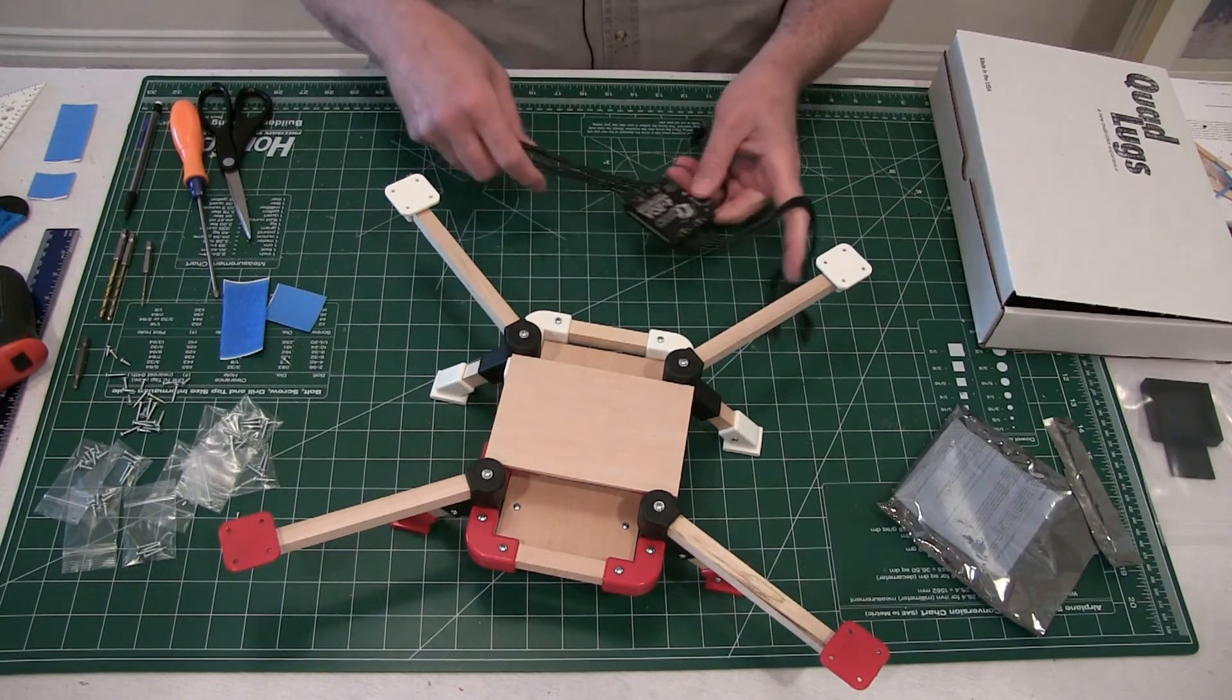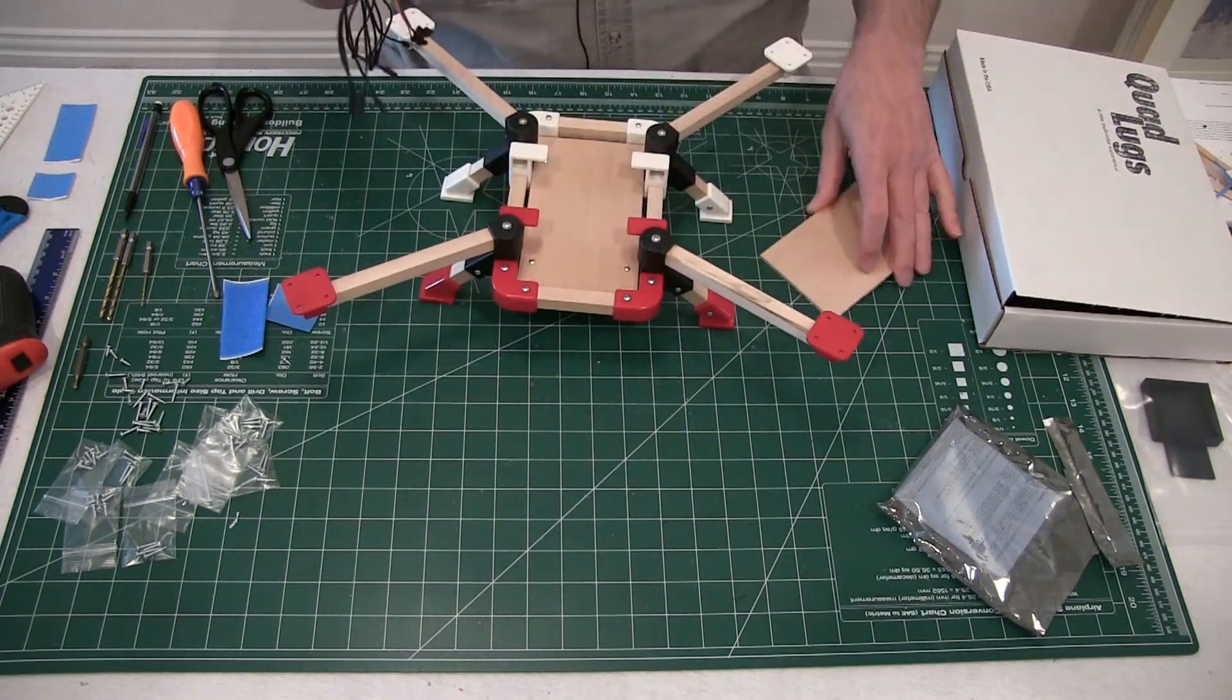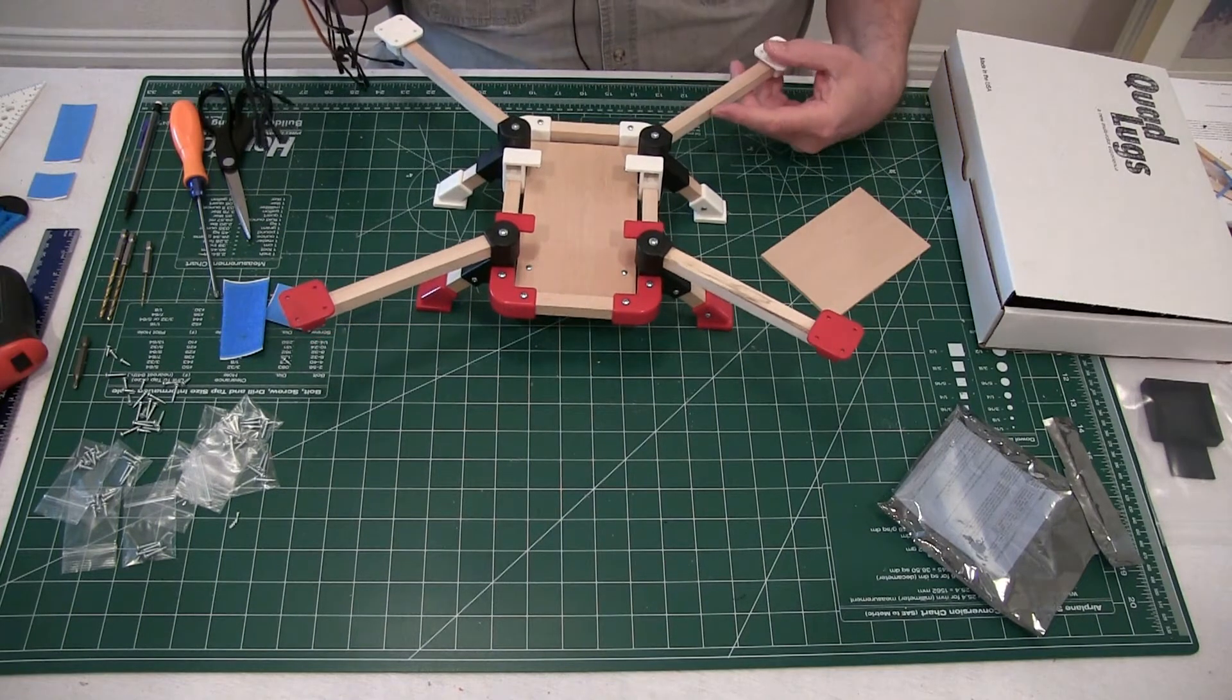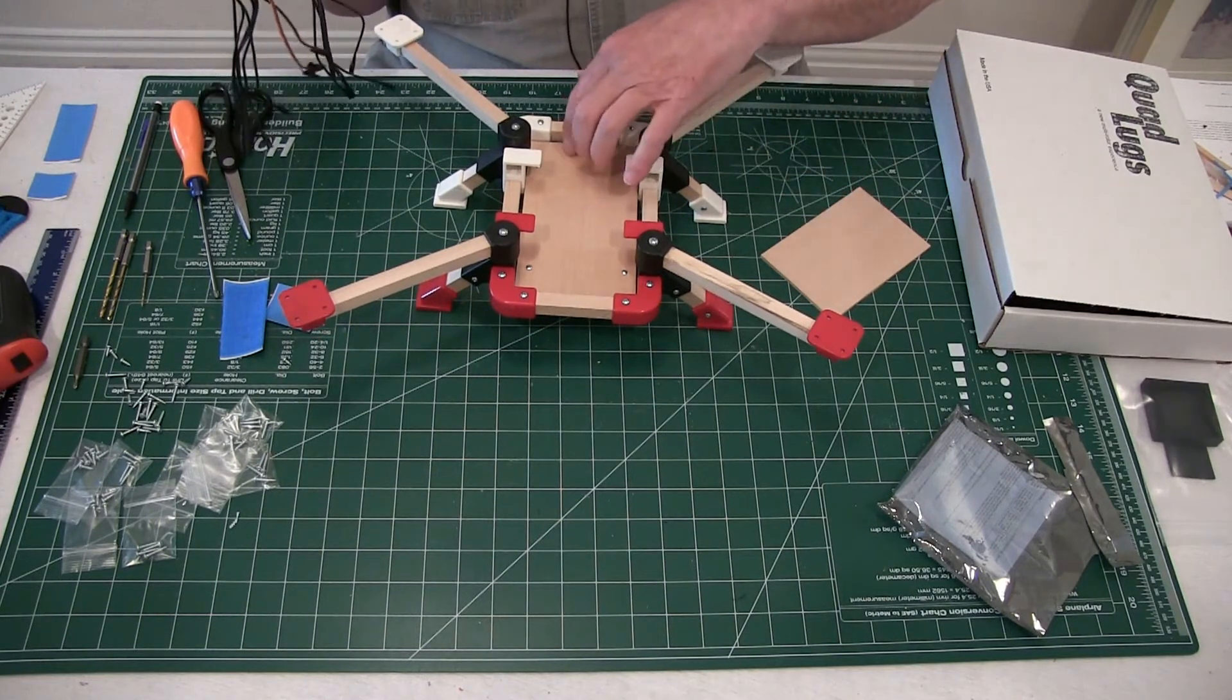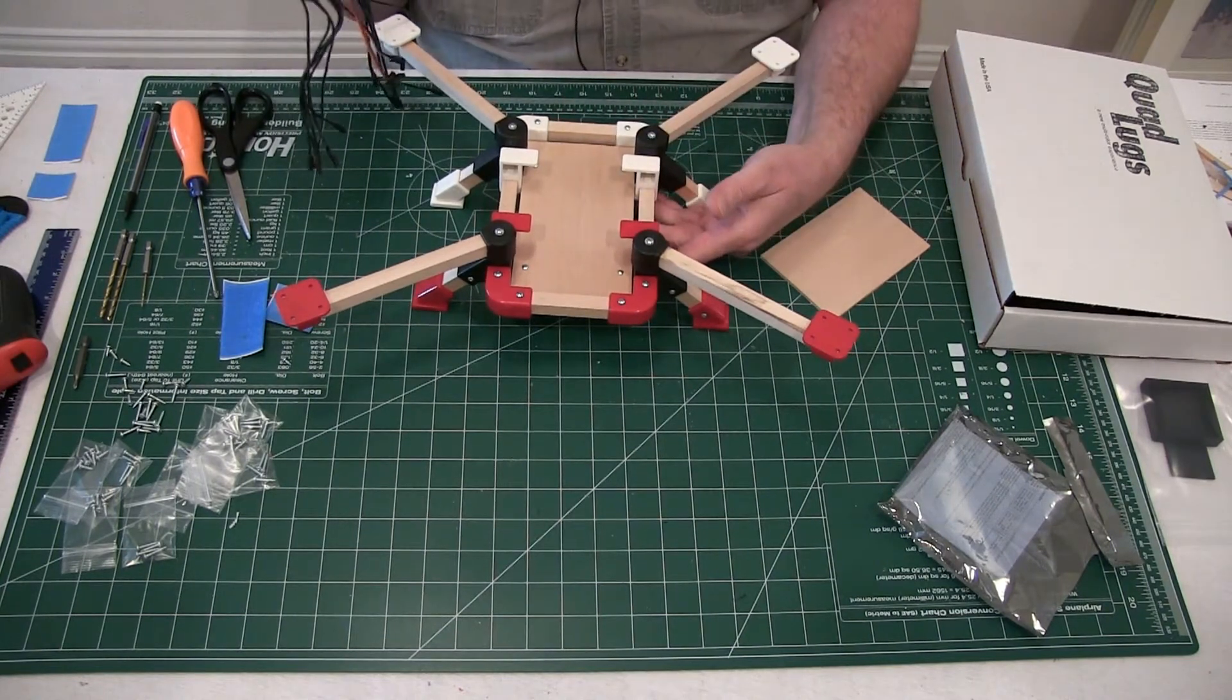Now if you're mounting just standard ESCs, it's like any quad or tri that you're going to build. You can put them on the arms, you can mount them anywhere on the deck you want, or you could actually mount them underneath the deck if you wanted to.